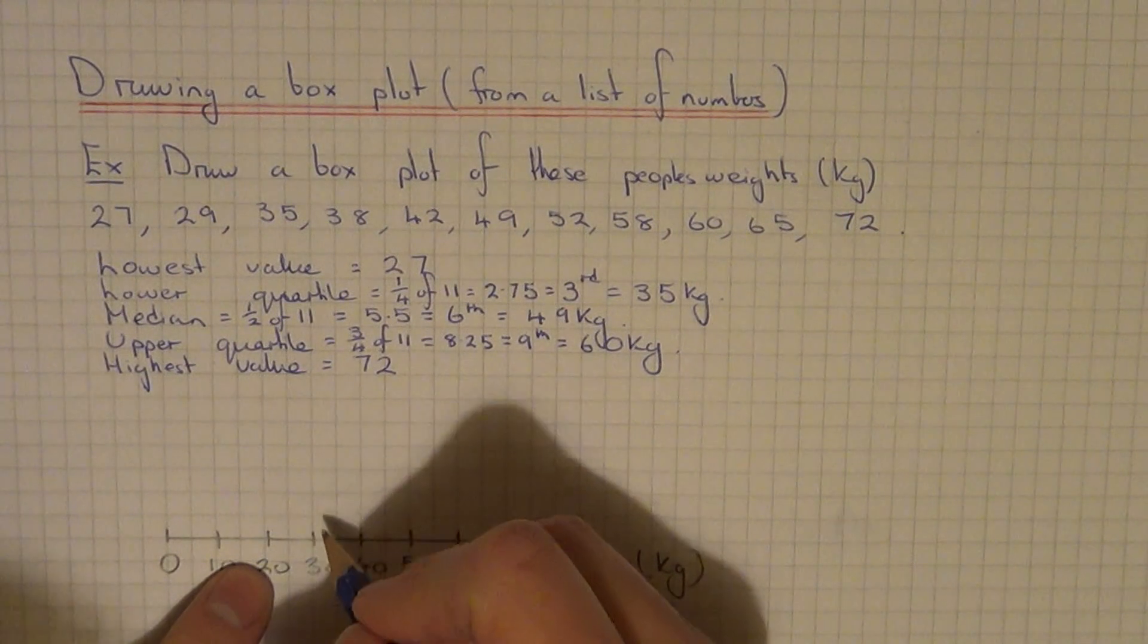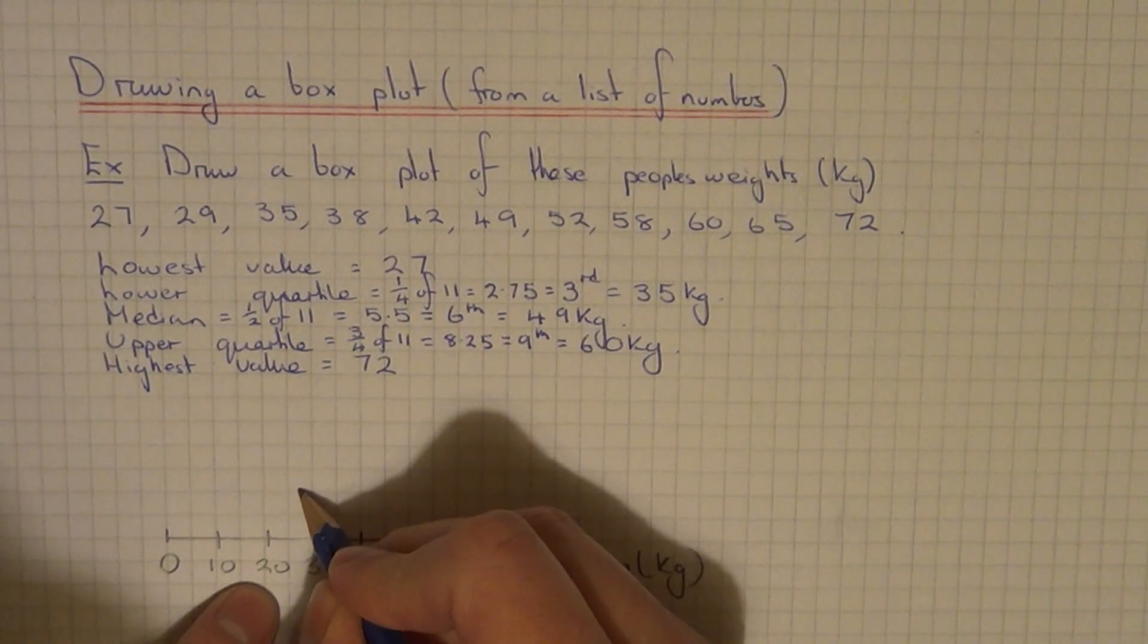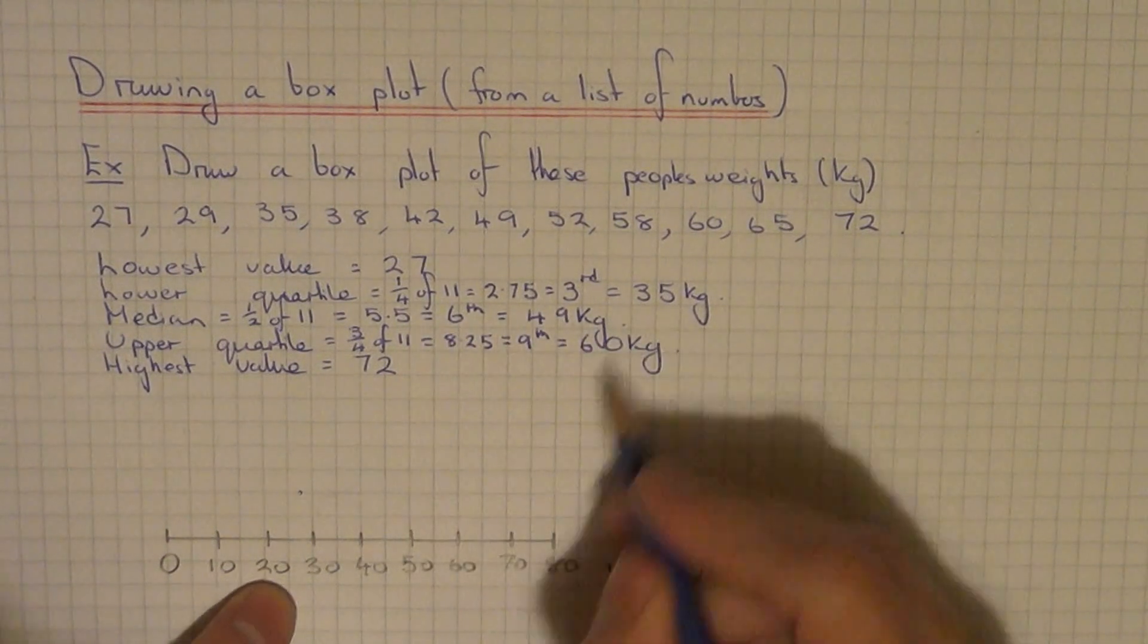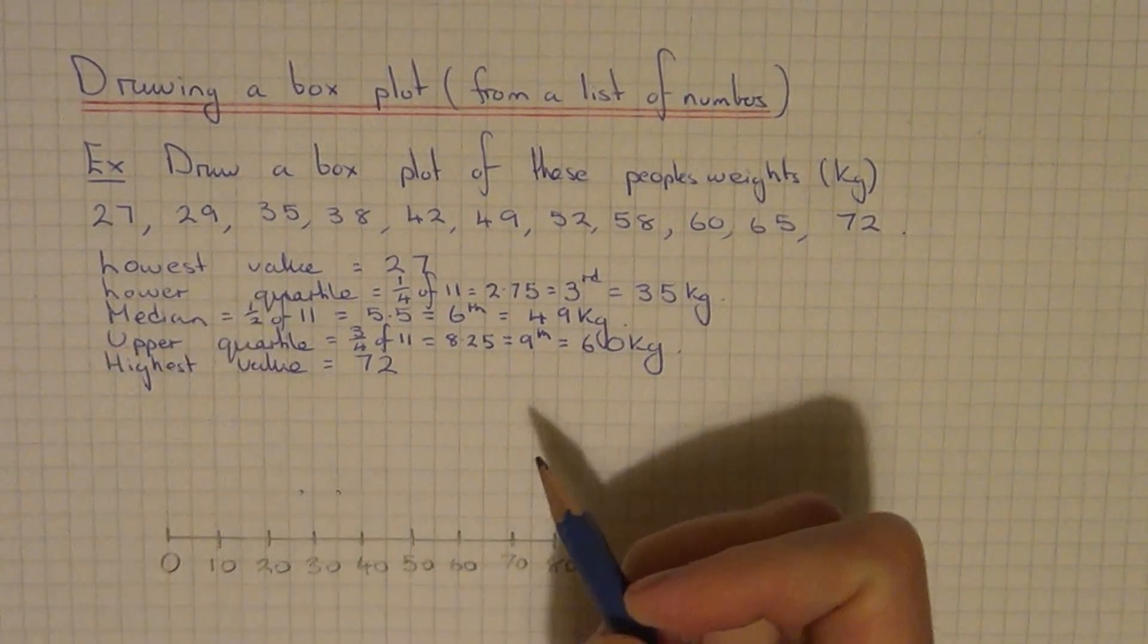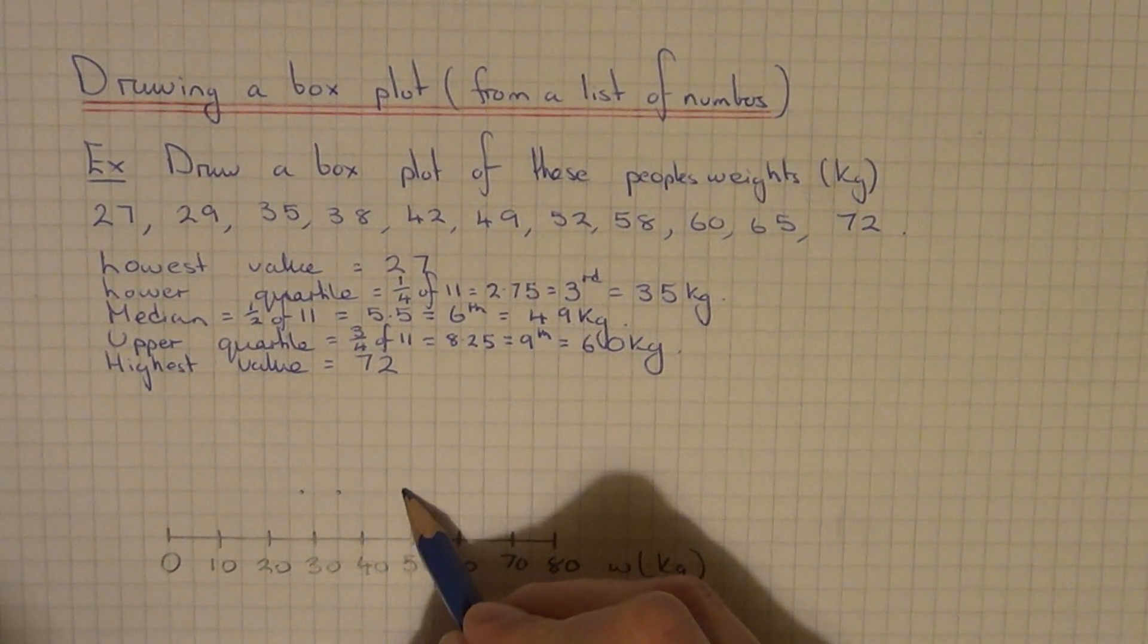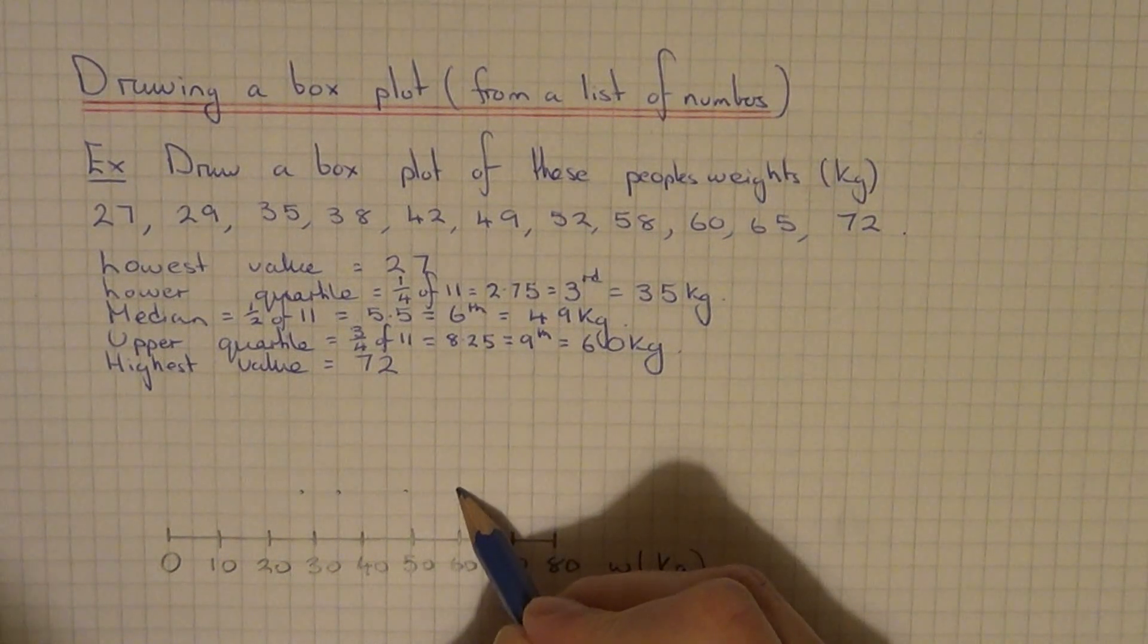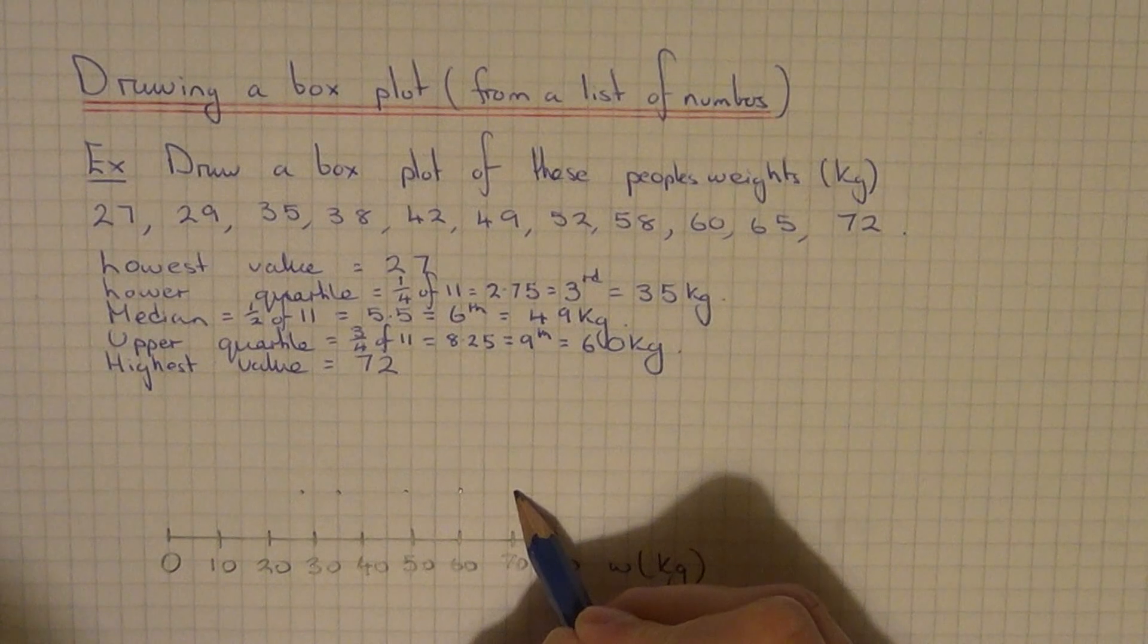The lowest value is 27, so that's about there. The lower quartile is at 35—let's put a little dot there. The median was at 49. The upper quartile is 60. And the biggest value is 72.